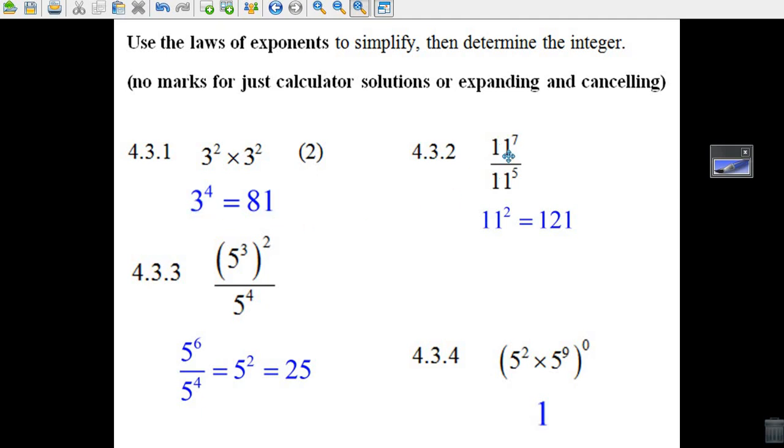When you divide two things at the same base, you write down the base and you subtract these exponents. So 11 to the 7th, which is some huge number, divided by 11 to the 5th, you go 7 minus 5, it's 11 squared. And 11 times 11, you should know, is 121.